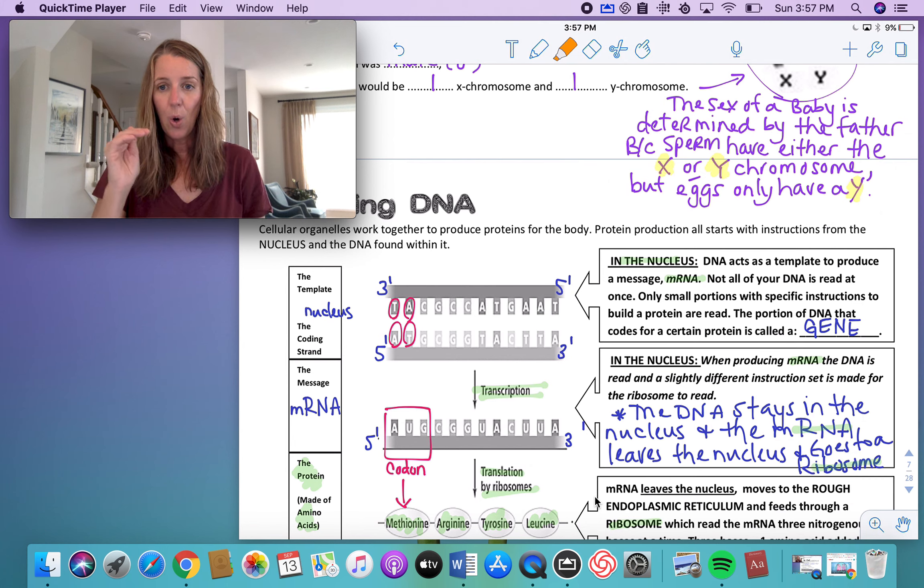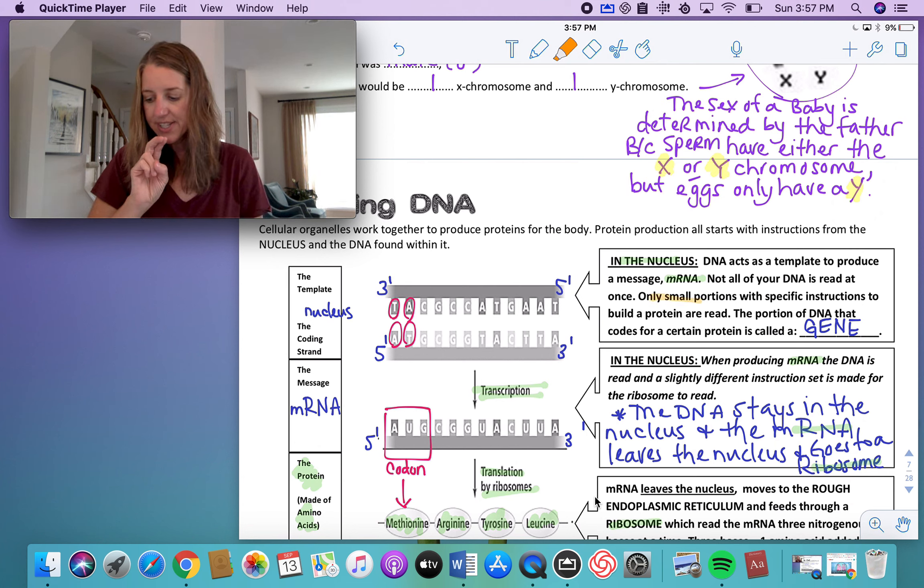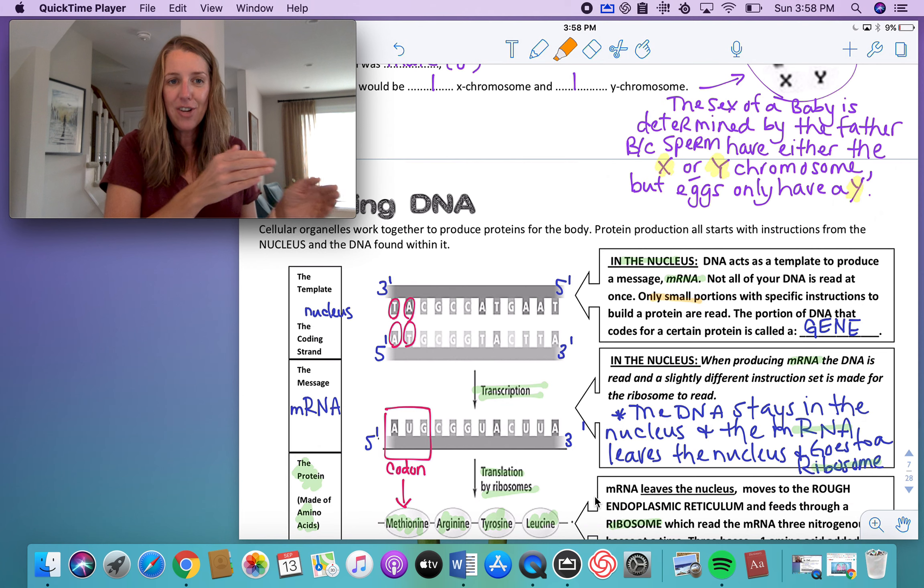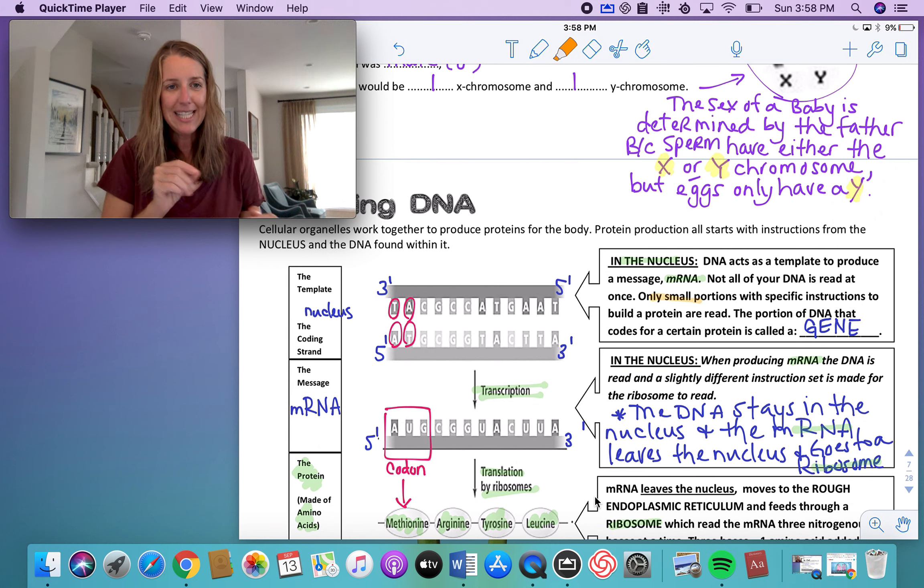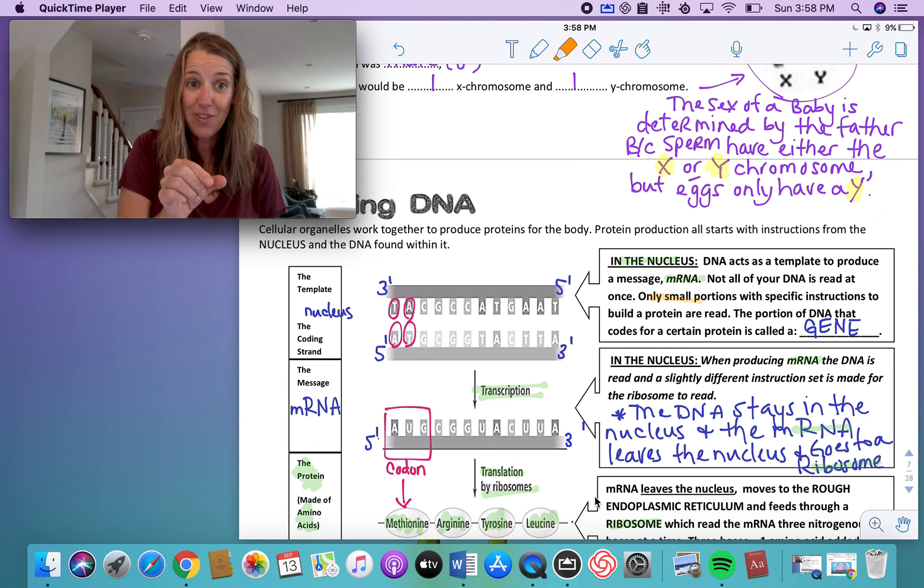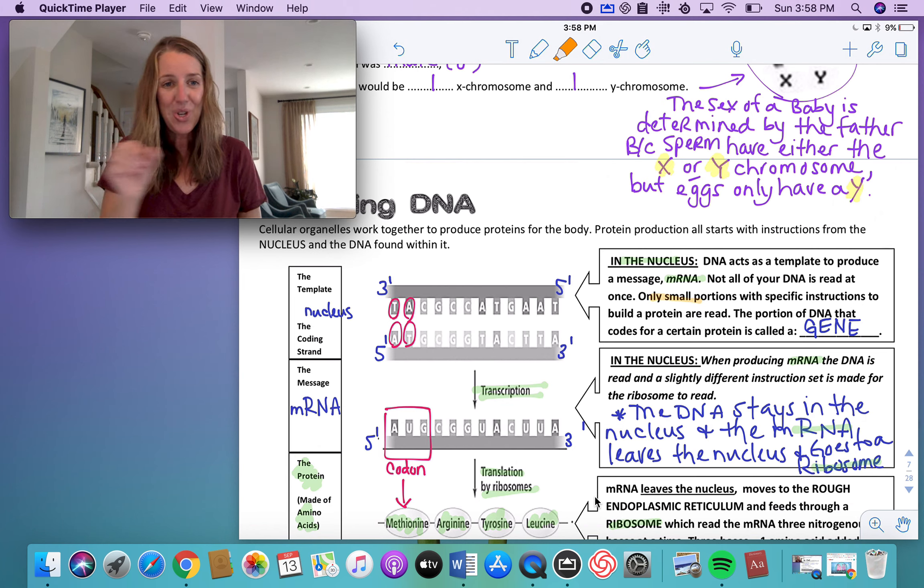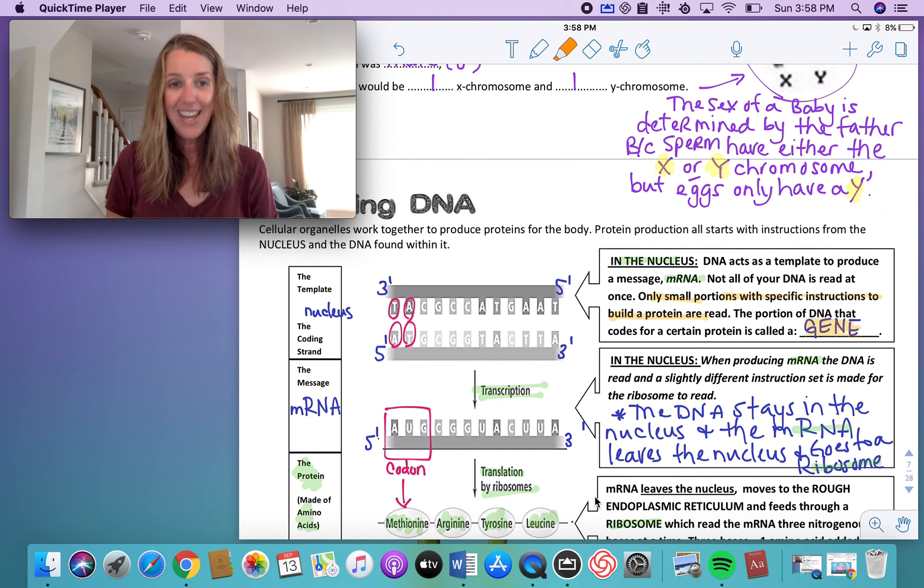So, only small portions, here I'm reading right here, with specific instructions to build a protein are read. Your cell doesn't do things that it doesn't need to. It wants to save energy. So it only makes the things it needs to make at that particular time. So therefore, it doesn't copy the entire DNA to make only a little recipe. It's like taking an entire recipe book. You don't need the entire recipe book to make just the chocolate cake. You need just the instructions from the chocolate cake to make the chocolate cake. So you don't need to copy out the entire recipe book. Same idea here. So what your cell does is only a small portion of those specific instructions to make a protein are read. The portion of that DNA that is coded for a particular protein is called a gene.